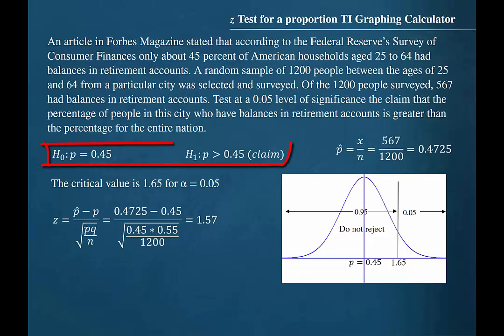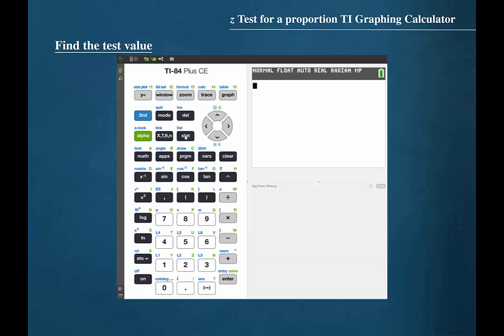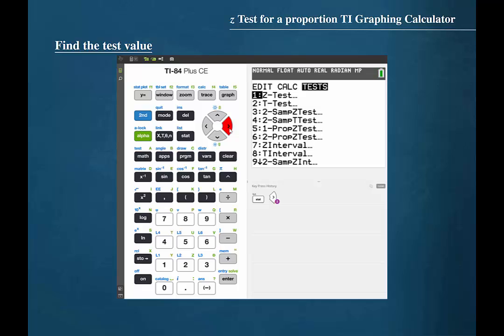We will need to know the hypotheses, the number of successes, the number of observations, and the hypothesized proportion. Press stat and then cursor over to tests. We are conducting a one-proportion z-test, so we should press 5.